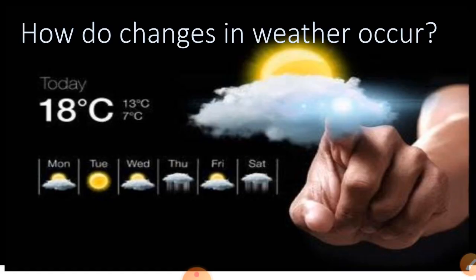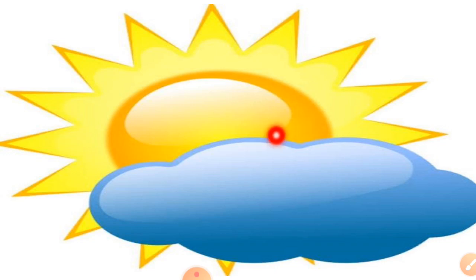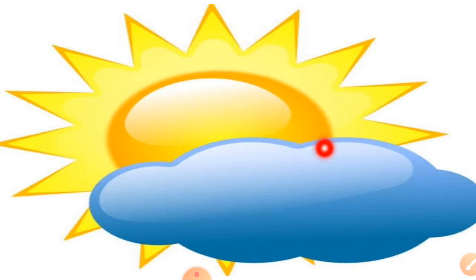How do changes in weather occur? All changes in the weather are driven by the sun. Any change in the weather of a place on Earth is because of the sun, which radiates large amounts of heat and light energy onto Earth. The formation of wind, the phenomenon of rainfall, and the change in seasons all occur because of the sun.